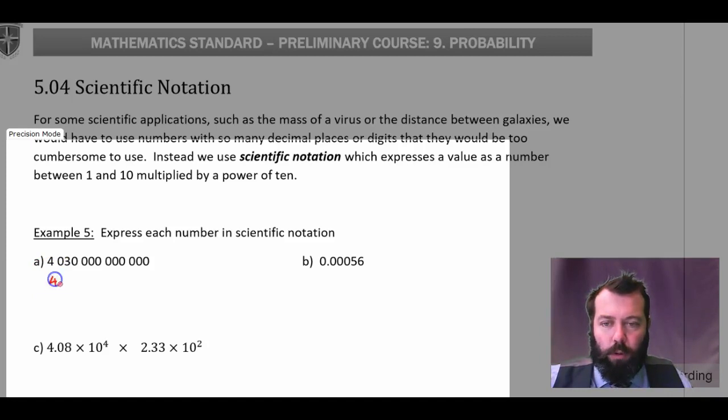So we're going to write 4.03. Don't worry about the zeros on the end because they're not significant. We just write the significant digits there. Now, this is times 10 to the power of what? Well, how many times would I have to move my decimal place? That's 1, 2, 3, 4, 5, 6, 7, 8, 9, 10, 11, 12. So that's times 10 to the power of 12. There's our first one.